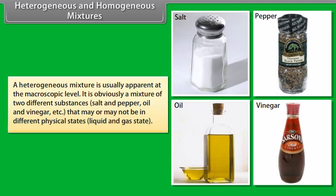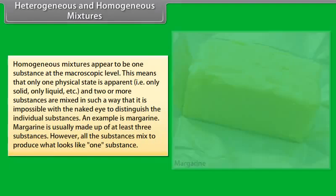Compounds are homogeneous materials which contain two or more elements combined in a definite proportion by weight. Examples of compounds are common salt, carbon dioxide, etc.